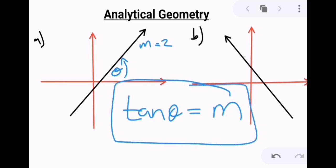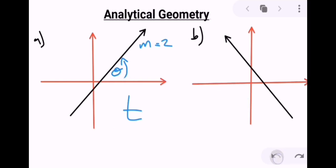Okay, so I'm just going to write it a bit smaller now. Tan θ equals the gradient. If the gradient is 2, I can substitute m with 2, and I can work out theta by simply taking shift tan of 2.